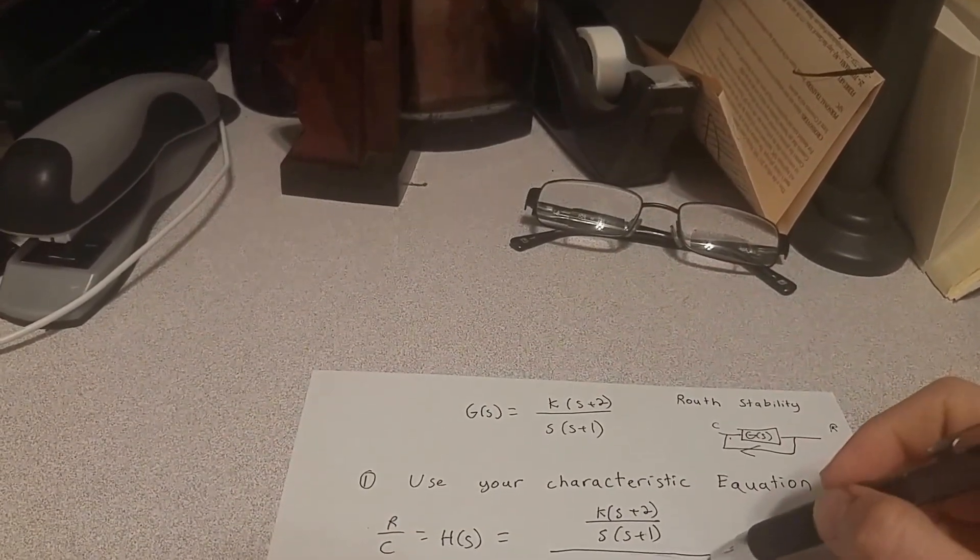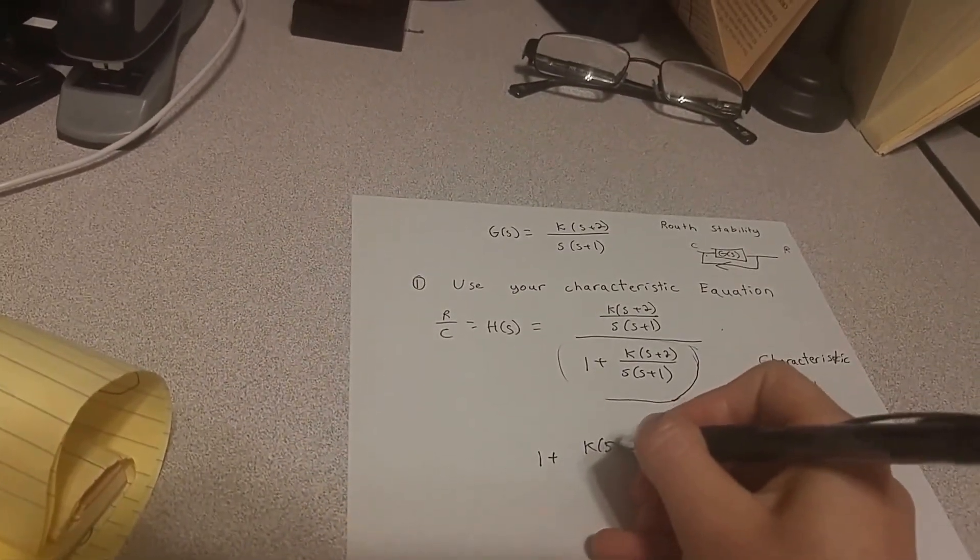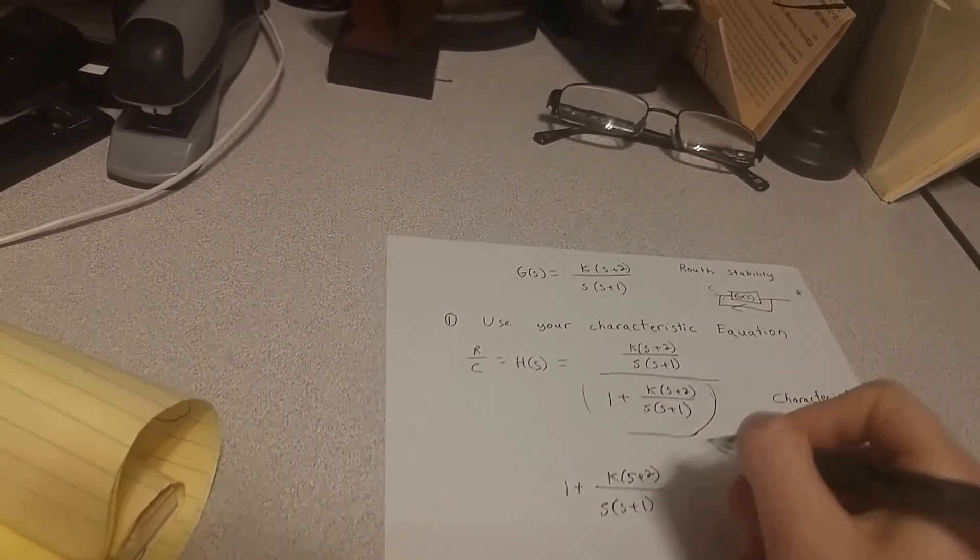But because we're looking for the poles of the function, we need to set the characteristic equation equal to 0. So when we do that, we get 1 plus k times s plus 2 over s times s plus 1 equals 0.